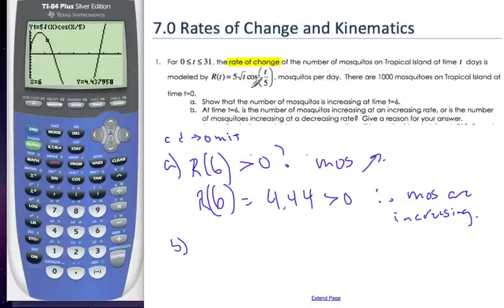Well, that means I need to find the derivative of this to see how the rate of change is increasing. So, I'm going to find r prime at t. And I can use my calculator to do this.